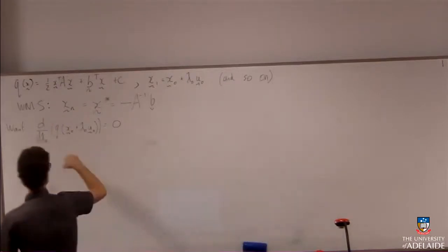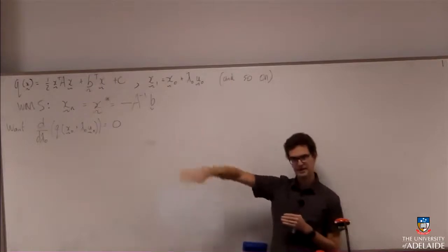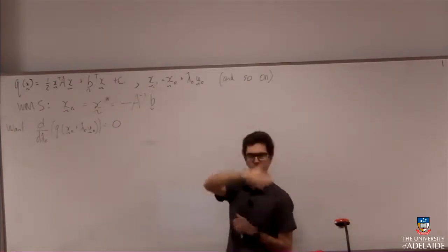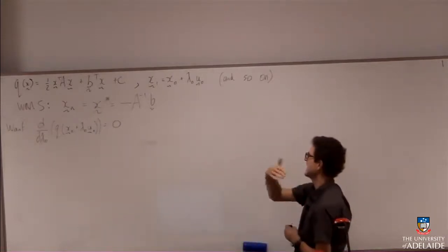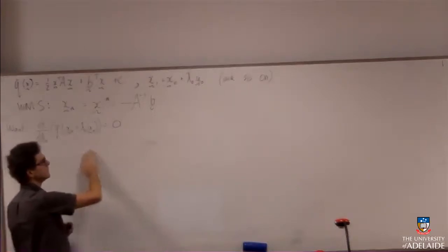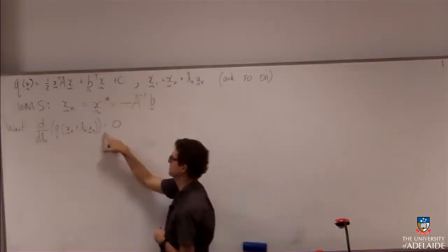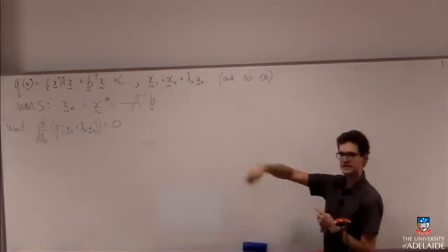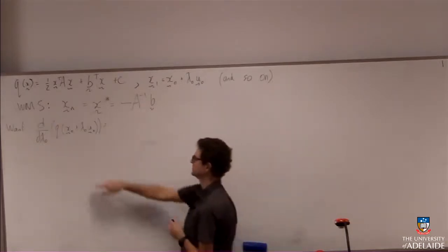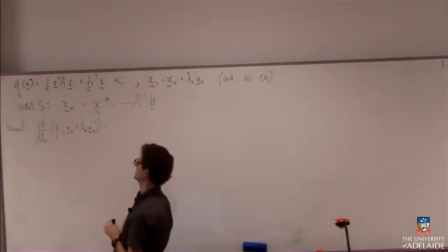Here's the approach. The way this works is that when I take a step from x_0 to x_1, I'm heading down a curve — along some line through my surface — and I choose lambda such that I end up at the bottom of that curve. I take the best step I can in the direction of u at each step. So basically, in the direction of u_0, I want to choose lambda_0 such that the derivative of that curve is equal to zero. We choose lambda such that we're at the minimum of q along whichever direction we're heading in. So this is what we want to demand.